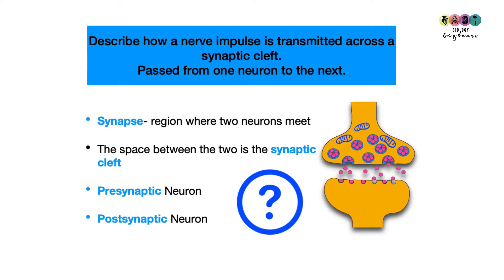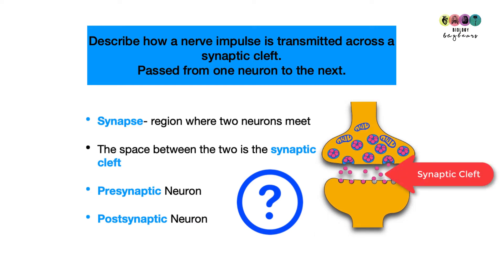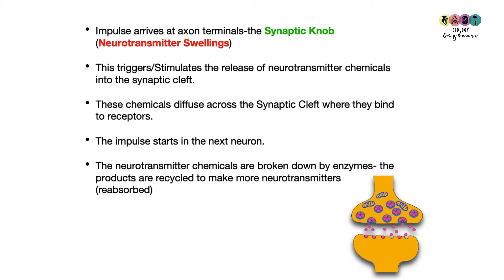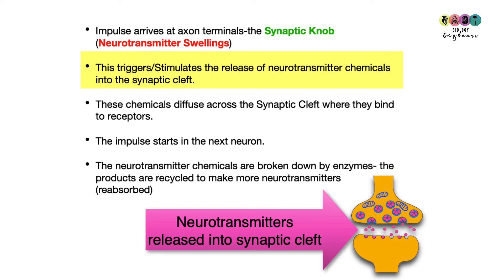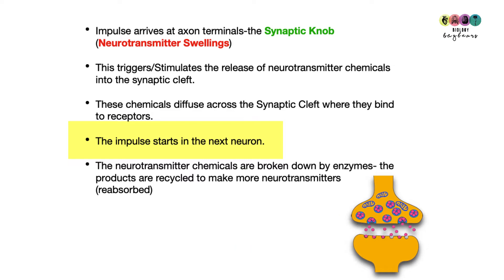Next question: describe how a nerve impulse is transmitted across a synaptic cleft — how it's passed from one neuron to the next. A synapse is a region where two neurons meet, and the space there is known as the synaptic cleft. There is a pre-synaptic neuron and a post-synaptic neuron. The impulse arrives at the axon terminals — the synaptic knob — triggering the release of neurotransmitter chemicals into the synaptic cleft. These chemicals diffuse across and bind to receptors on the post-synaptic neuron, starting the impulse in the next neuron.